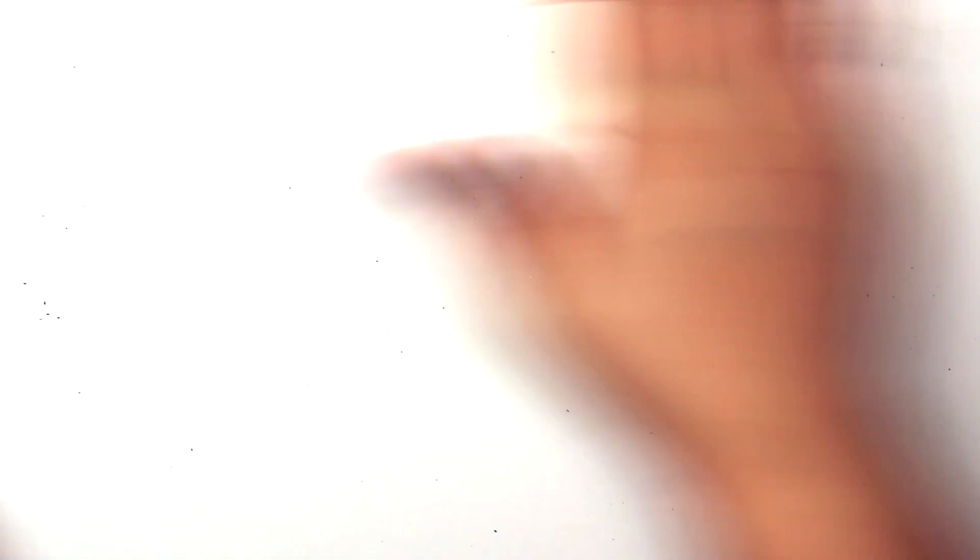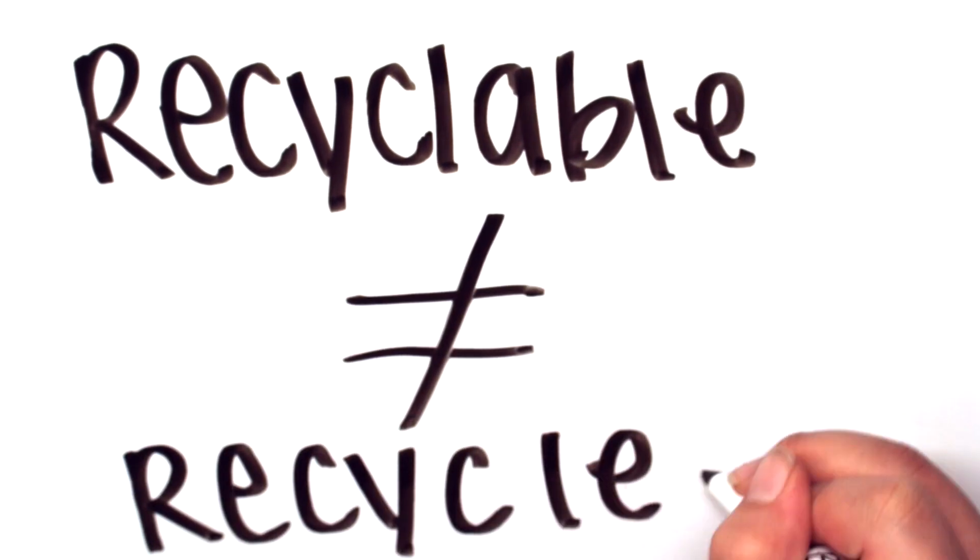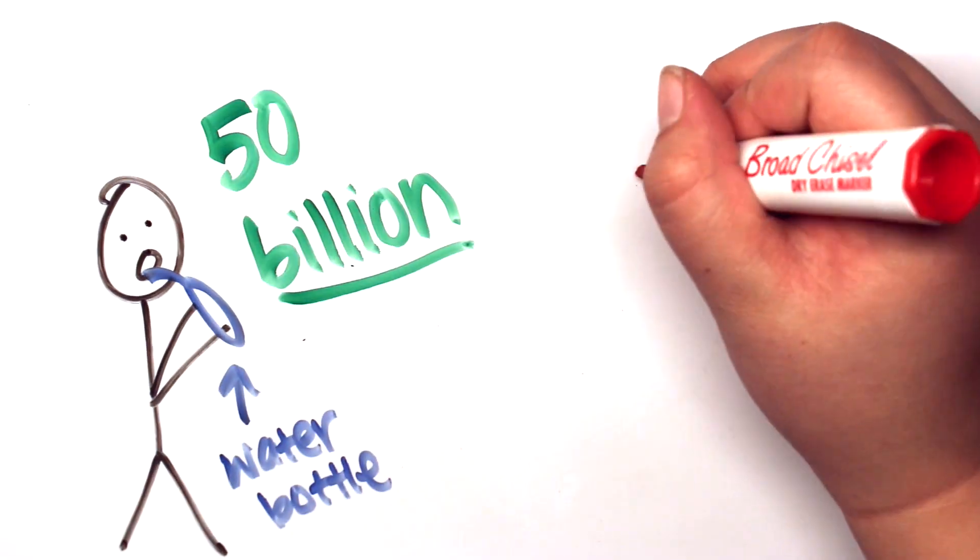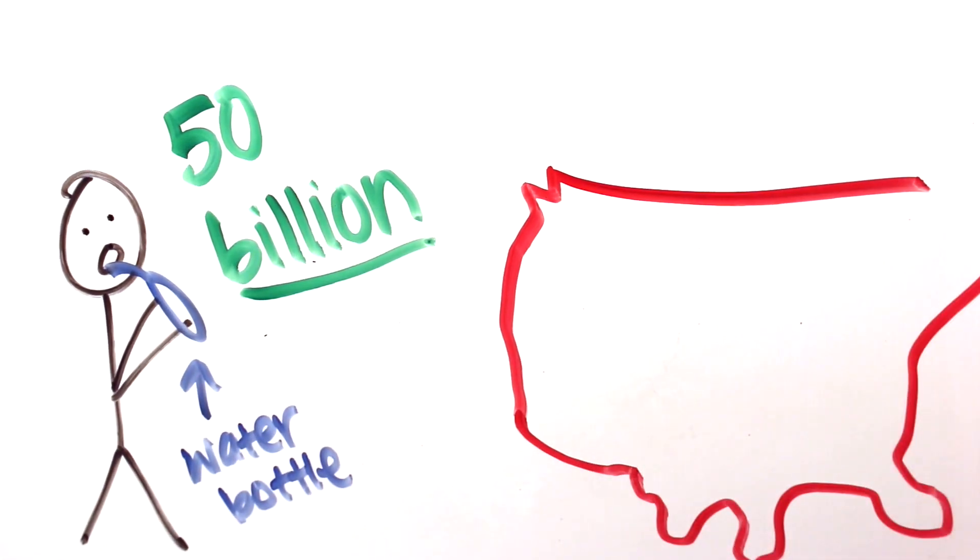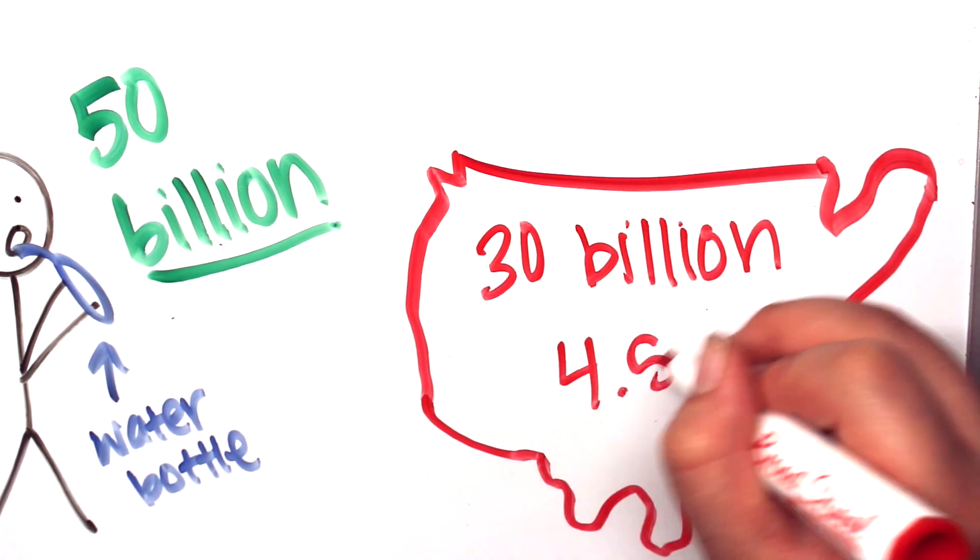Plastic water bottles aren't even recyclable in the way that you may think. It's misleading because recyclable is not the same thing as recycled. There are 50 billion water bottles consumed every year, about 30 billion of them in the U.S., which means we consume roughly 60% of the world's water bottles, even though we're only about 4.5% of the world's population.